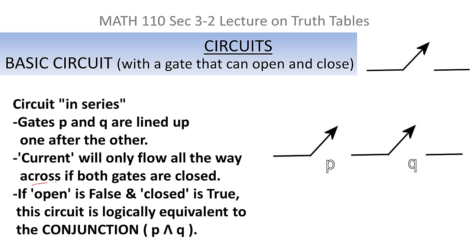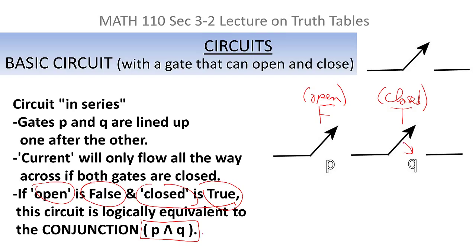If we associate an open gate with the idea of a false statement, in other words, if that gate is open, we associate that with a false statement. And if the gate is closed, we associate that with a true statement. Then that circuit in series is equivalent to our AND statement that we just studied. Because AND is only true if they're both true. In the sense that I could say current will flow through only if both gates are closed. If I equate closed to true, then this series circuit behaves in the same way as our logical statement with an AND.